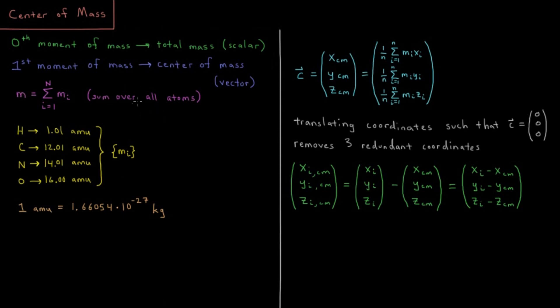So our total mass is just the sum of the mass of all of the individual atoms from the periodic table. That would give us our mass in atomic mass units, which is 1.66054 times 10 to the minus 27 kilograms. It's like 1 over Avogadro's number divided by 1,000.